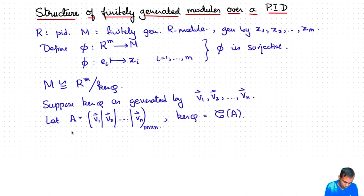So what we have is M is isomorphic to R^m mod the column space, not the kernel, the column space. So we have expressed our finitely generated R module in terms of finite set of generators and a finite set of relations which we have represented by this m by n matrix.